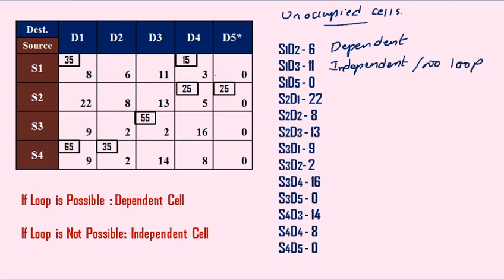Next case: S1, D5. Going left direction — S1, D5 is having a closed loop. So we can state that S1, D5 is a dependent cell.